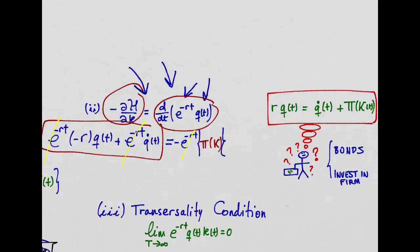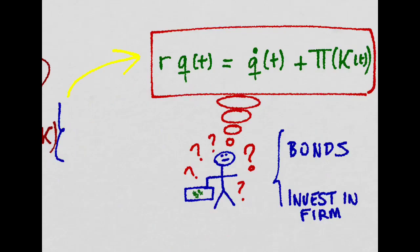What this says is that if you are an investor who has Q dollars and you have to decide whether to invest in bonds, which yield a return of R, or invest in a firm and get basically the marginal productivity of capital and whatever gain or loss there is in your capital in terms of value, which is equal to this.